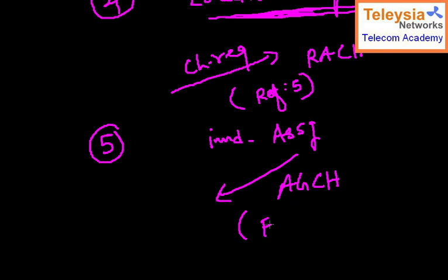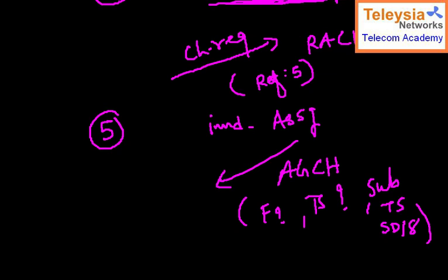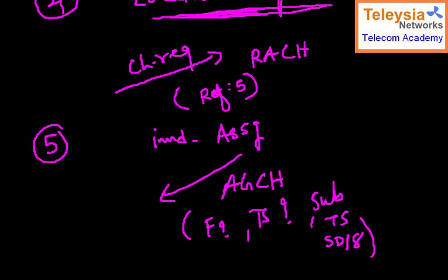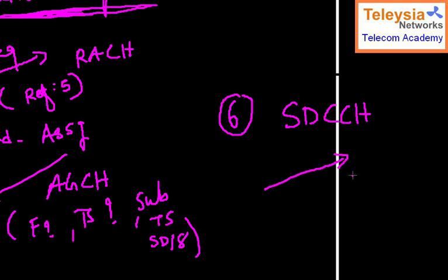In this Access Grant message, the network informs you that you are accessing for a Location Update and you need an SDCCH. The access grant tells you at which frequency, which time slot, and which sub-slot of the SDCCH/8 you need to go to. You grab that SDCCH slot and proceed to further authentication and ciphering. After getting this positive answer from the network, you move to the sixth step.